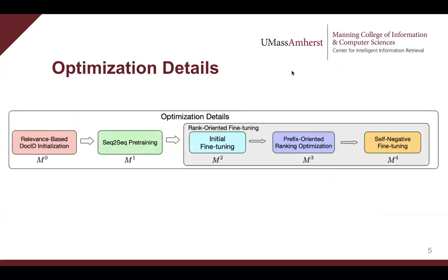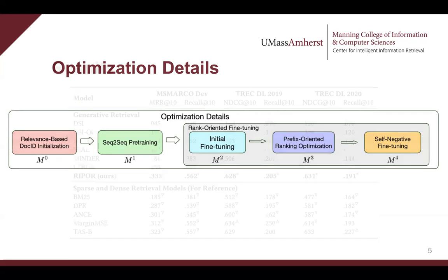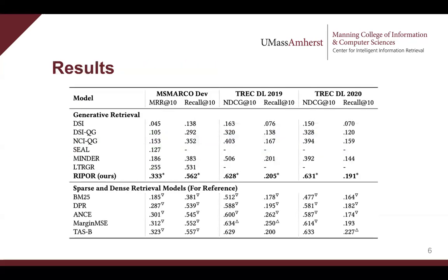This is the whole training pipeline — you can check the paper for more details. We evaluate our model on the standard MS-Marco benchmark that contains 8.8 million passages. We can observe that RIPPLE outperforms the previous state-of-the-art GR models like LTRGR by 30% in terms of MRR@10 on the MS-Marco development set. RIPPLE can also achieve competitive performance compared to several dense retrieval baselines.